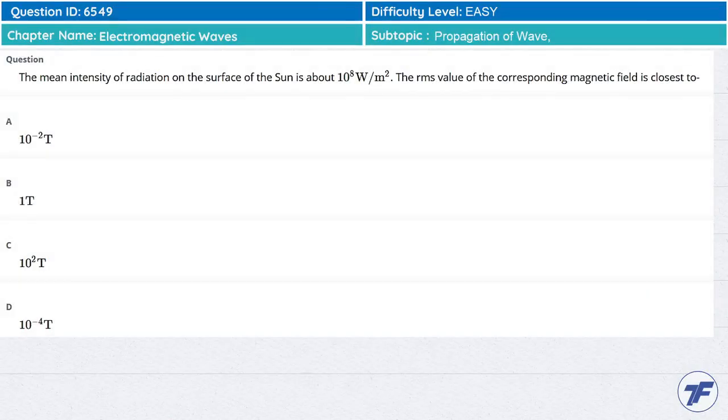The mean intensity of radiation on the surface of the Sun is about 10^8 watts per meter squared. The RMS value of the corresponding magnetic field is close to: